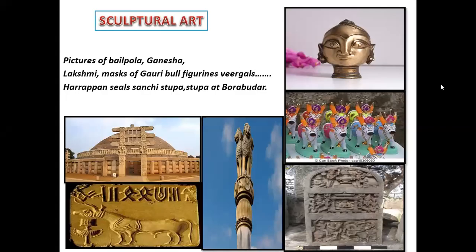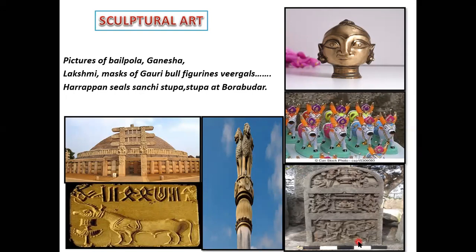When you talk about sculptural art, you also have pictures of Bailpola. During this Bailpola festival, you have small figures of the bull, which is very important as India is an agricultural country. The bulls and oxen are worshipped and farmers express their gratitude to these animals for helping them in agricultural activity. Similarly, you have figures of goddess Lakshmi, the mask of Gauri. Then you also have Virgals — memorial stones built to honor those soldiers or warriors who have become martyrs and sacrificed their lives during battles.